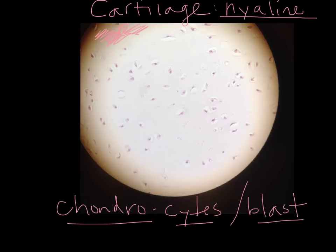Initially, the mesenchymal cells that differentiate into chondroblasts — they're immature cells — and it's the chondroblasts that start secreting the matrix. But once those cells become surrounded by matrix, they are called chondrocytes. These little guys right in here are your chondrocytes, and they're surrounded by what we call a lacuna — the space that each chondrocyte occupies. So you have a chondrocyte in a lacuna, and the edge of that cavity is the capsule.